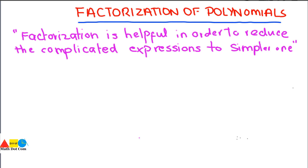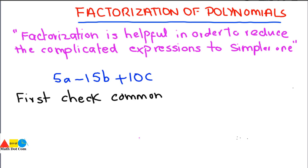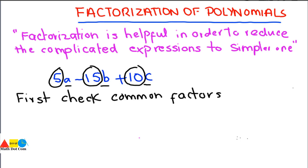The first method applies when you are given with an expression, for example, 5a minus 15b plus 10c. The first thing you have to do with any polynomial is to check whether we can take any common factors out of it or not. In this equation, the variables are different — there is no common variable in the three terms — but the constants are all multiples of 5.